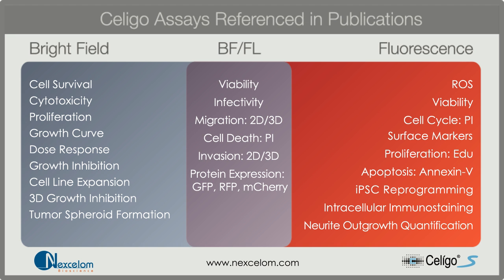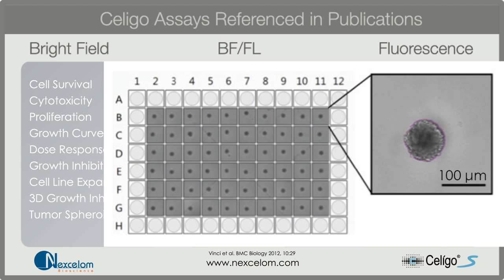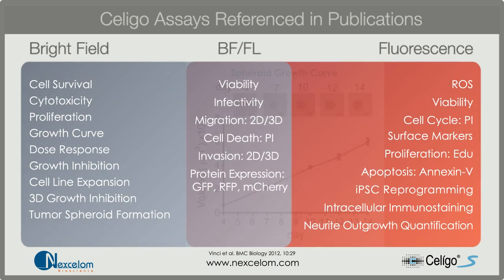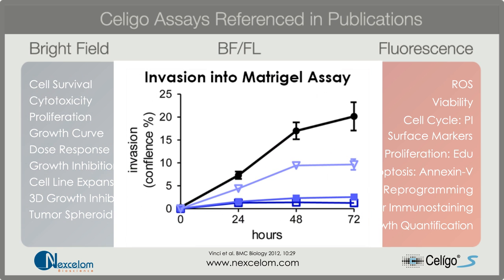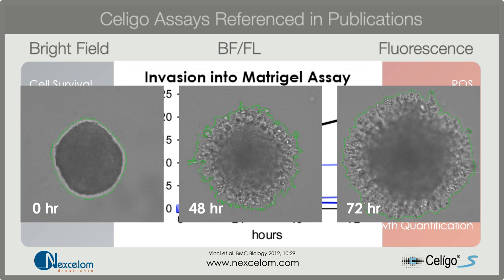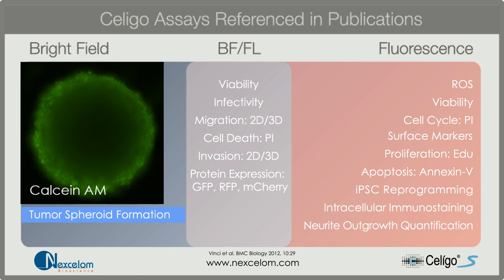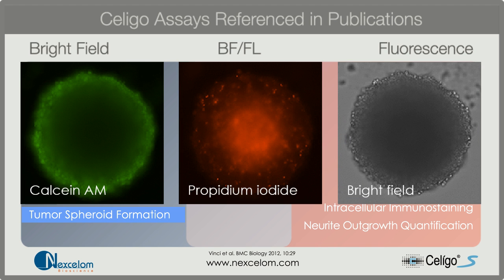For tumor spheres, the Siligo has recently been effectively utilized for target validation and evaluation of therapeutics in 3D tumor cultures. In addition to imaging and examining the inhibition or growth of tumor spheroids, the instrument is capable of examining cell invasion into Matrigel from the spheroid. The Siligo's ability to image colonies and spheroids in flat-bottom and U-bottom plates makes it a uniquely versatile instrument.